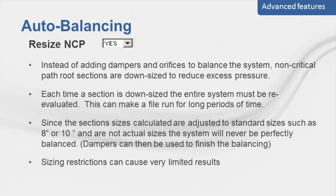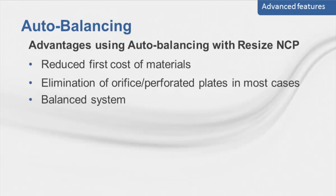If auto balance has already been selected, resize non-critical paths will become available as an option. The program will downsize the non-critical paths of the duct system if possible to decrease the excess static at the terminal devices without affecting the critical path. Downsizing duct sections impacts the entire system, so you should expect calculation times to increase accordingly. Running this feature can reduce installation costs by reducing duct materials without affecting operating costs. Downsized sections on non-critical paths remain within the original design constraints such as maximum section velocity. If some excess static still remains, dampers can further be added by selecting yes in the add dampers and orifices drop-down box.